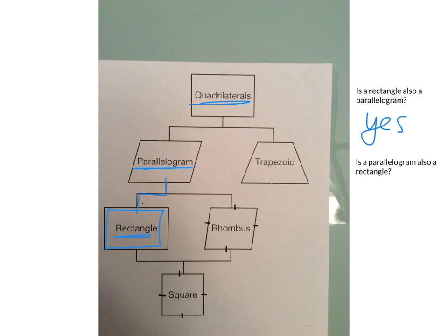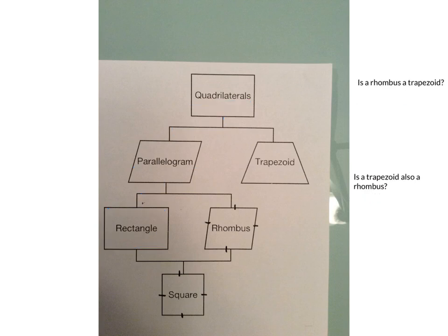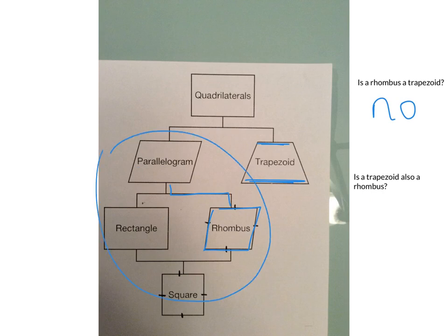Next: is a parallelogram also a rectangle? No — the parallelogram does not fall underneath the rectangle on the family tree, so a parallelogram is not a rectangle. Next: is a rhombus a trapezoid? No, it does not fall underneath the trapezoid on the family tree. Trapezoids have one set of parallel sides, but a rhombus has two sets of parallel sides, so a rhombus is not a trapezoid.